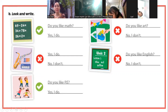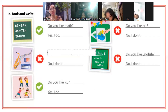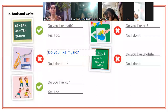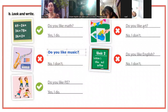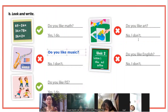Rồi xuống đây. Ở cái bài này, người ta hỏi Do you like music? Bạn có thích môn âm nhạc không? Đánh dấu tích thì các bạn nói là Yes, I do. Tương tự qua bài tiếp theo, Do you like art? Bạn có thích môn vẽ không? No, I don't. Không.